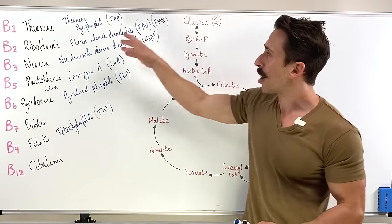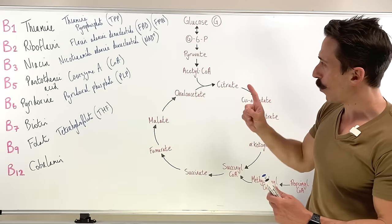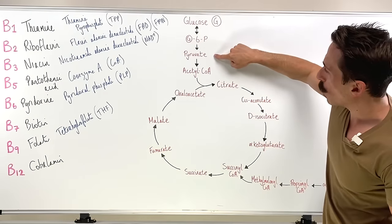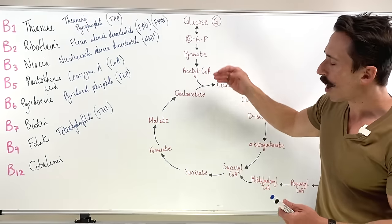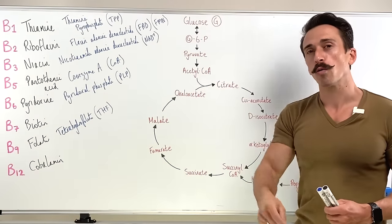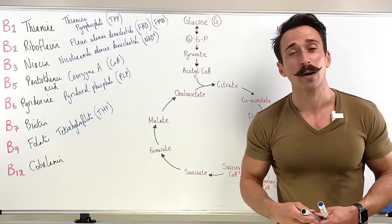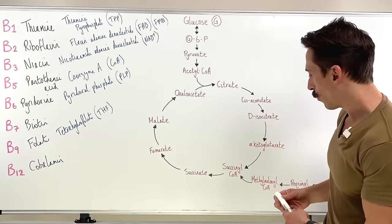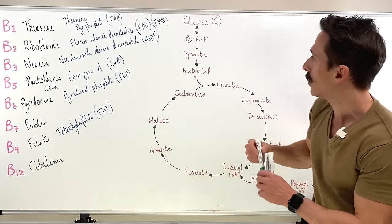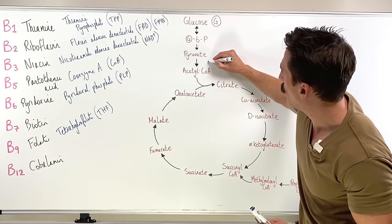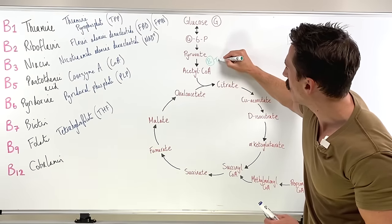B1 — thiamine. Thiamine pyrophosphate is an important coenzyme which allows for pyruvate to turn to acetyl-CoA, a very important process. This requires an enzyme called pyruvate dehydrogenase, and what TPP does is it plays around with carbon dioxide. So we've got B1 working at this point in the form of TPP.